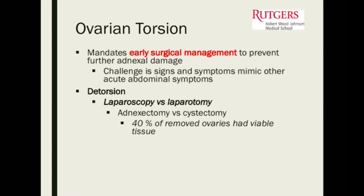Identifying an ovarian torsion can be challenging. When we operate, we want to be able to save the ovary. We don't want to remove the ovaries of our young patients, because if we remove one, they only have one left. And if something happens to that other ovary, removing both will obviously affect their fertility.